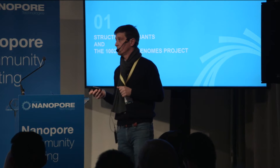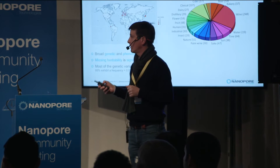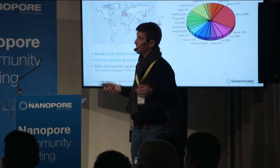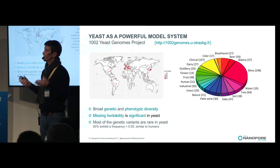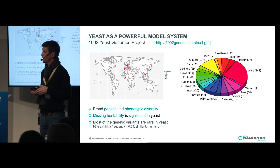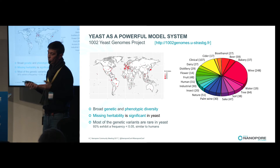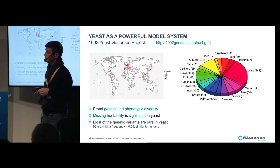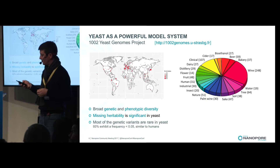In order to do that, we're using yeast as a model organism because it has a small genome — 12 megabases — and it's compact. We started to sequence a large number of isolates, more than 1,000, in the frame of the 1,002 yeast genome project. We have isolates from different ecological and geographical origins, and after sequencing we found broad genetic and phenotypic diversity, significant missing heritability, and most genetic variants are rare in yeast — meaning it could be a good model.